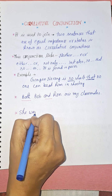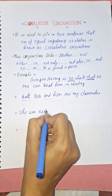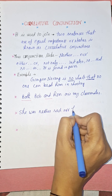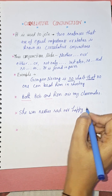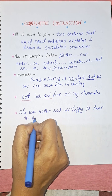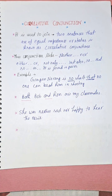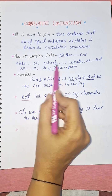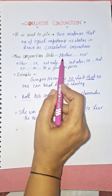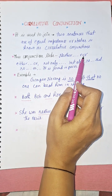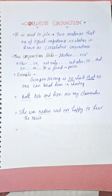Another example: She was neither sad nor happy to hear the news. Here 'neither' and 'nor' are the pair. With 'neither' you will always use 'nor', and with 'either' you will always use 'or'. This pair is used for negative sense — she was neither sad nor happy to hear the news.